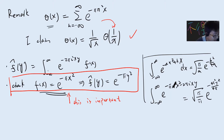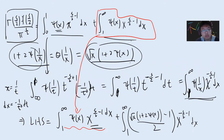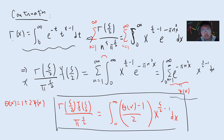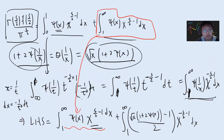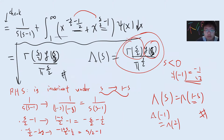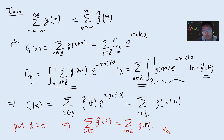In the previous approach, we related the zeta function to Jacobi's theta function, which is defined with this formula, and we used Fourier analysis to prove this relation. Once we have this, we can write it with the gamma function and do some calculation, then finally prove that gamma(s/2) times zeta(s) times pi^(s/2) is related to this theta function — that was the previous proof.